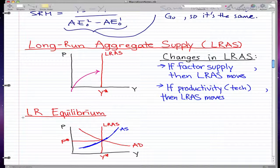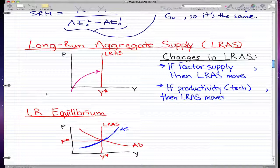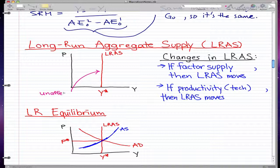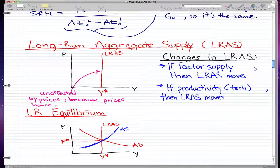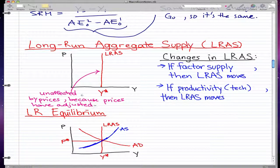I want to make note that this long-run aggregate supply line or curve is unaffected by prices, because by now prices have already adjusted. So in the long run, this long-run aggregate supply curve is unaffected by prices because prices have adjusted.